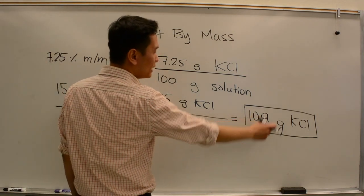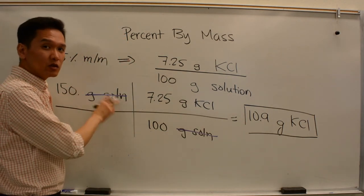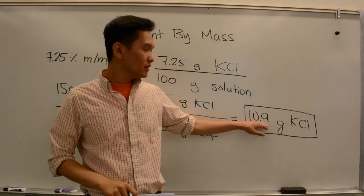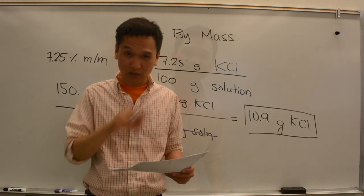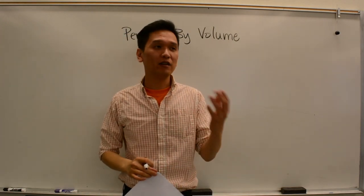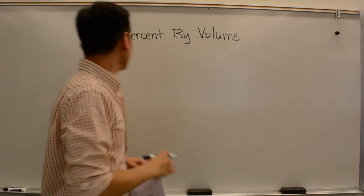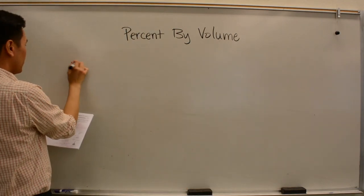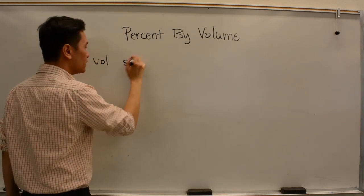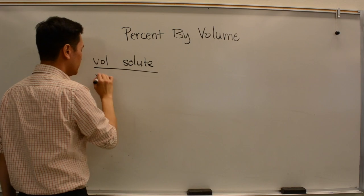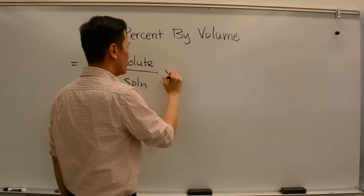What does this number mean? 10.9 grams KCl means that if I took out 150 grams of that solution, 10.9 grams of it is KCl — the mass of the solute. Now let's do this again using a different concentration unit. This time we're going to do percent by volume.